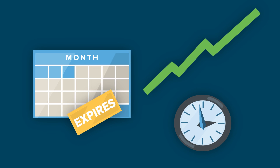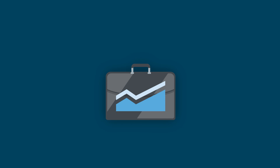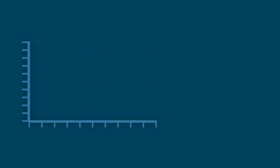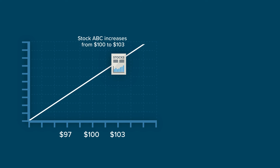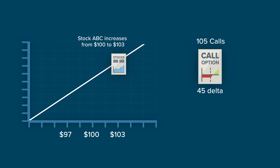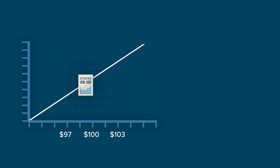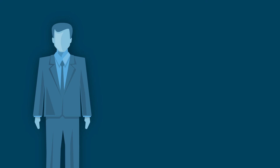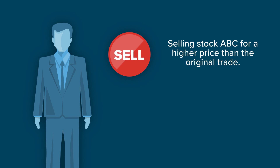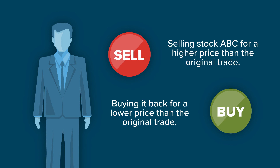As time progresses towards expiration, the delta will change due to stock movement and/or time decay. The investor will need to continue to monitor their position and trade more stock to remain delta neutral. For example, if stock ABC increases from $100 to $103, the 105 calls are now a 45 delta. For the position to remain delta neutral, the investor would need to sell an additional 150 shares of stock. Notice in each scenario the investor is either selling stock ABC for a higher price than the original trade or buying it back for a lower price than the original trade. If the investor was short the call, the opposite would be true in order to remain delta neutral.